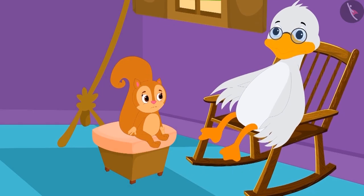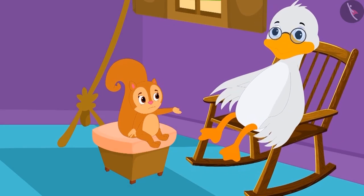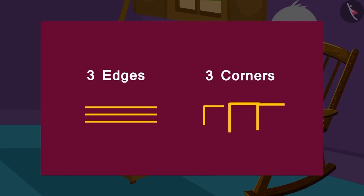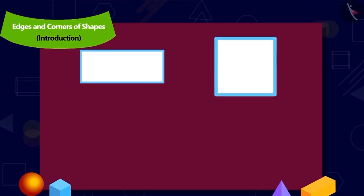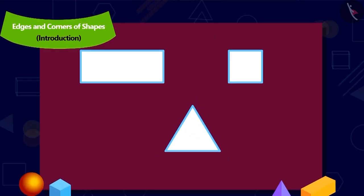Then Chanda told Uncle that she is looking for an object that has three edges and three corners. Uncle made these three shapes on paper. Children, do you recognize these shapes? Yes, this is a rectangle. This is a square. And this is a triangle.